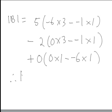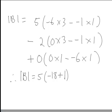Therefore, the determinant of B will be 5 multiplied by negative 18 minus negative 1 — so negative 18 plus 1, multiplied by 5. Then subtracting off the next one: minus 2 lots of 0 times 3, which is 0, minus negative 1, giving 0 plus 1.